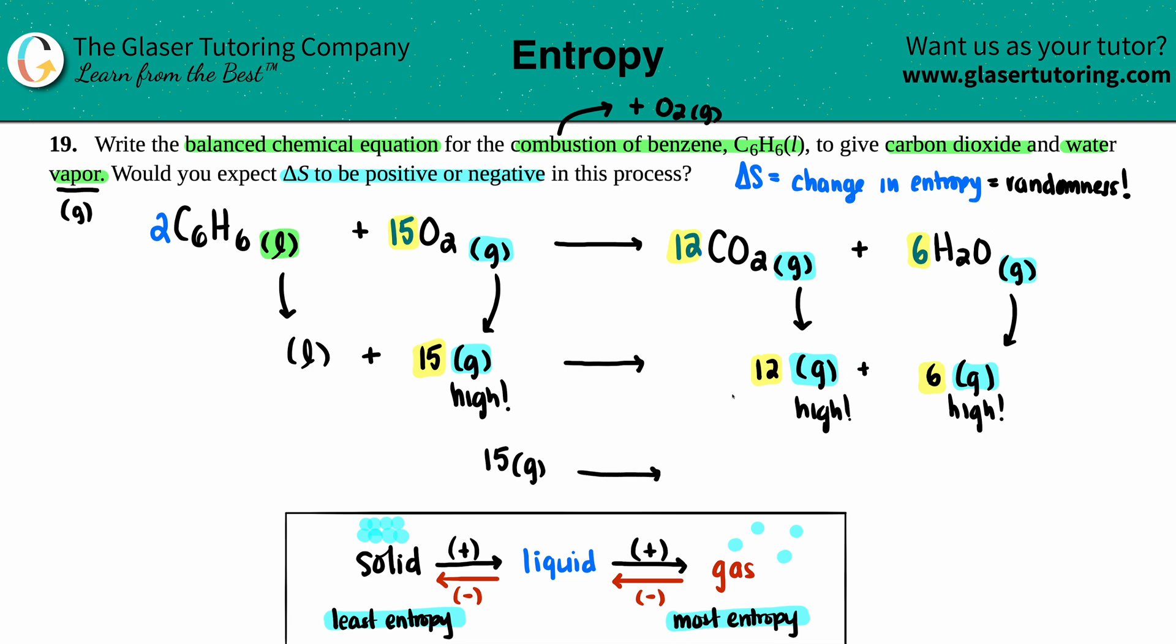Did I become more random or less random? It looks like I added—15, 16, 17, 18—three gas molecules to the mix. And the more gas you got, the more random, the more chaos that system's going to be. So since you added three more gases at the end of the day, your delta S would be more chaotic than what it started with. That means that it would be a positive value.